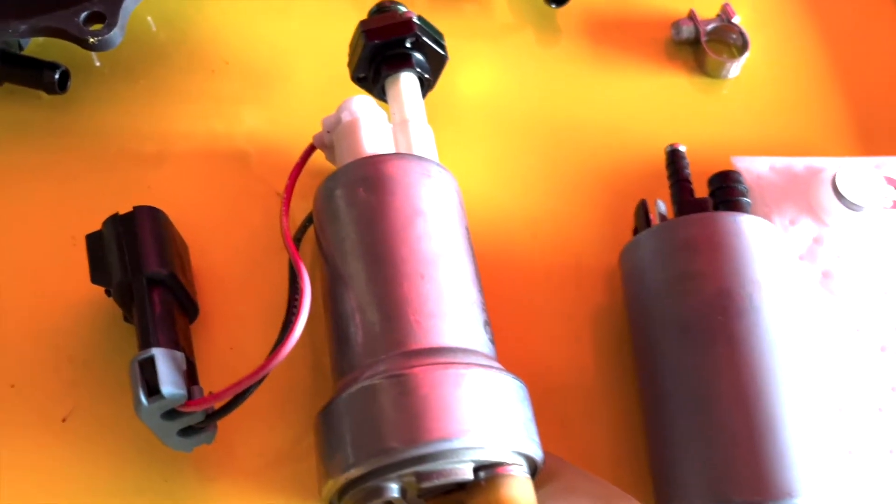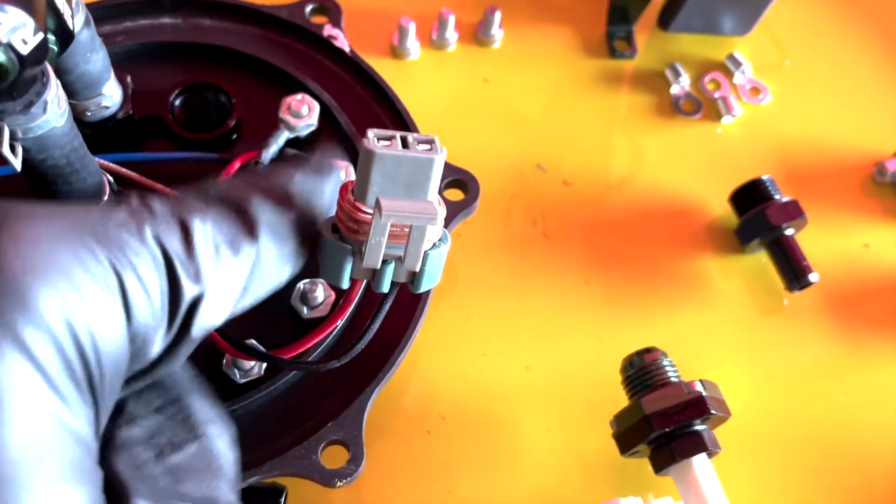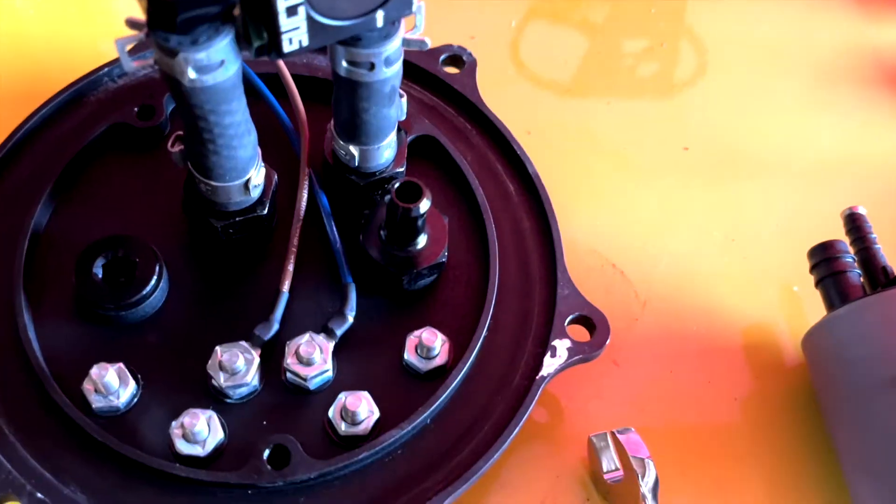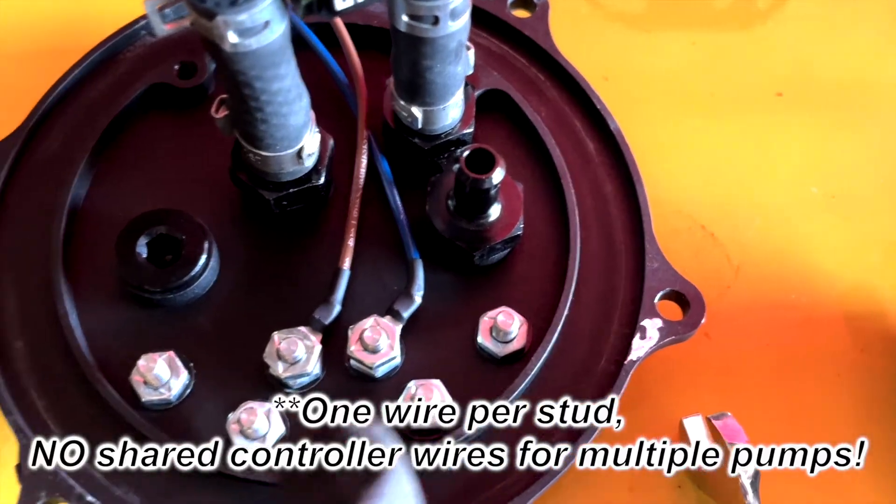Remove any pre-existing wiring from the hanger. You are now going to wire in your fuel pump using three of the four pre-existing studs.